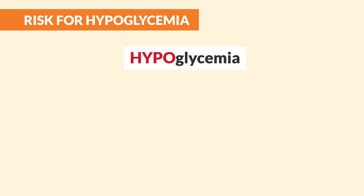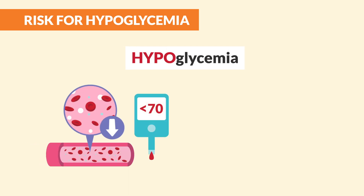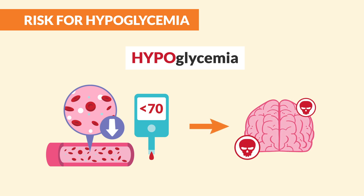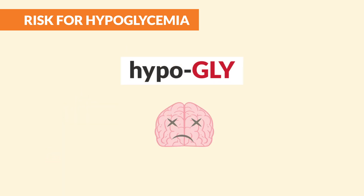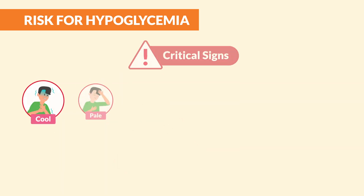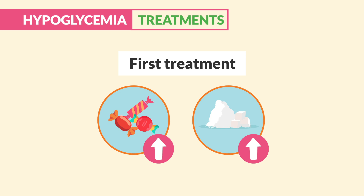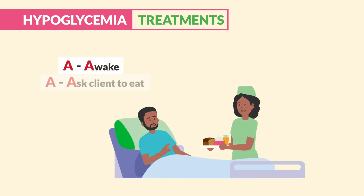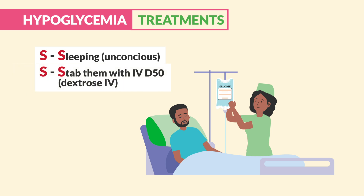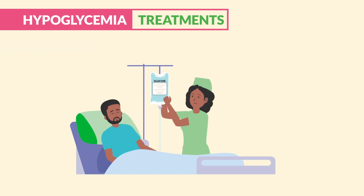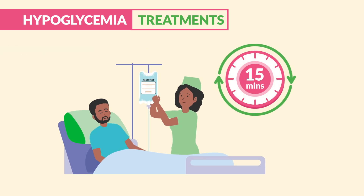We also have to watch for hypoglycemia — that low blood sugar, less than 70. It's really important to know that this one is far more deadly than high blood sugar. Simply think: hypogly — the brain will die. Since hypoglycemia is so deadly, our very first treatment is to give sugar. If our client is awake, ask them to eat either juice, soda, crackers, or low-fat milk. But if our client is asleep, stab them with IV dextrose. Always reassess sugars 15 minutes after any intervention.